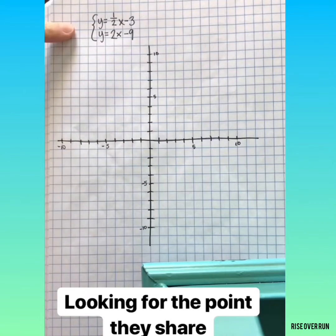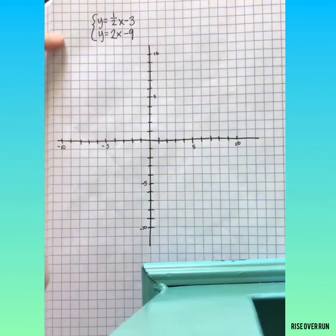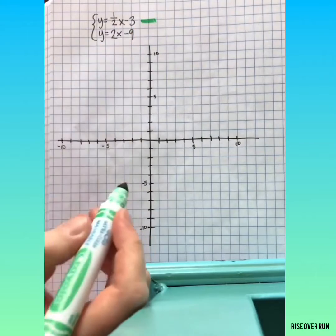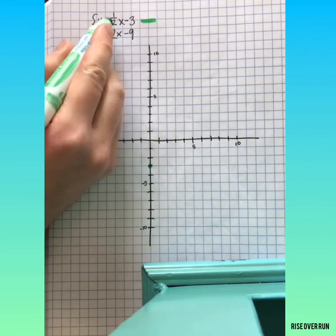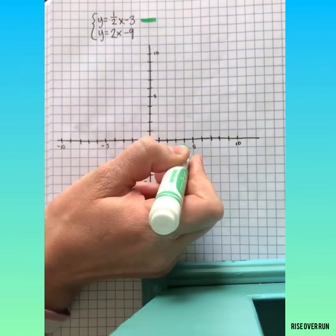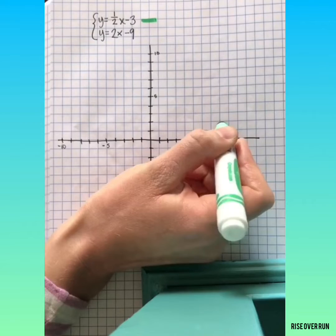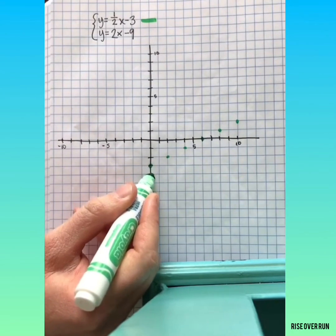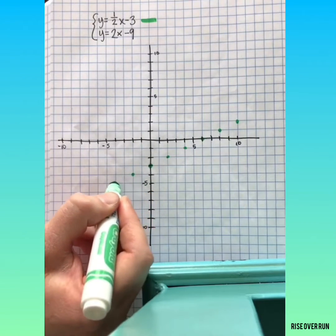So first, let's solve this system by graphing it. We'll graph the first equation in green. So it has a y-intercept of negative 3 and a slope of 1 half, so rise 1 and run 2. And you'll want to do that several times so you can get a nice clean line. We can also go back this way by moving down 1 and to the left 2. That still creates a positive slope.